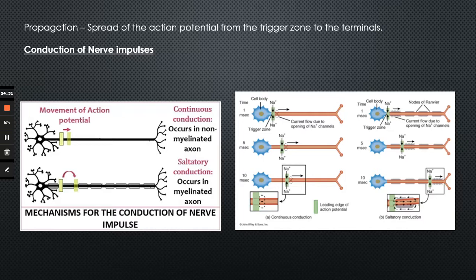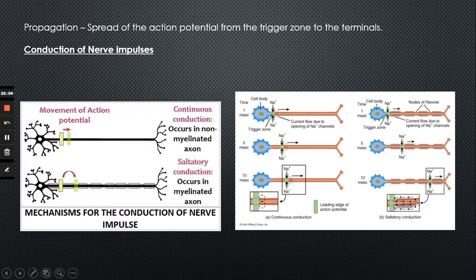Propagation includes conduction of nerve impulses. There are two types: continuous conduction and saltatory conduction. Continuous conduction occurs in non-myelinated axons — this is what we've been discussing. Voltage-gated ion channels are stimulated and the action potential spreads continuously down the axon and out all of the terminals. Now we have a name for it: continuous conduction.